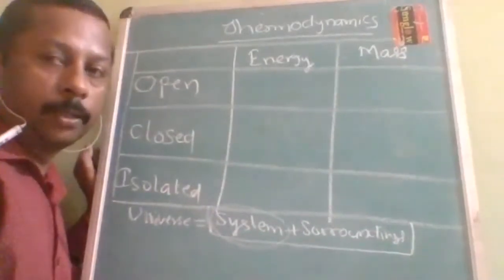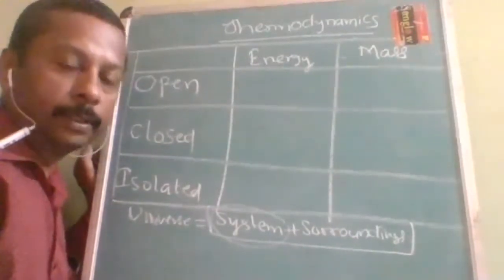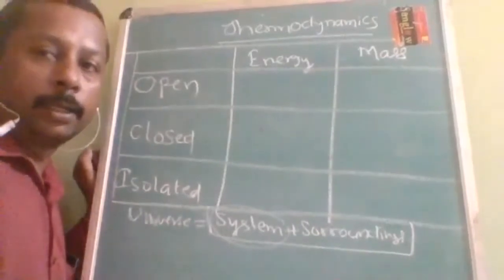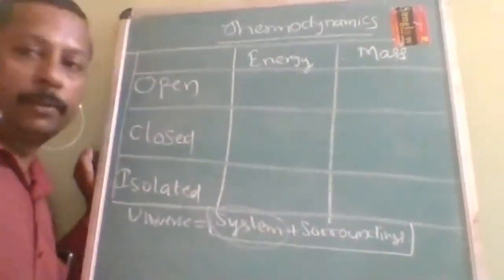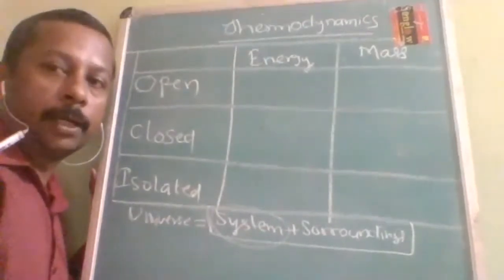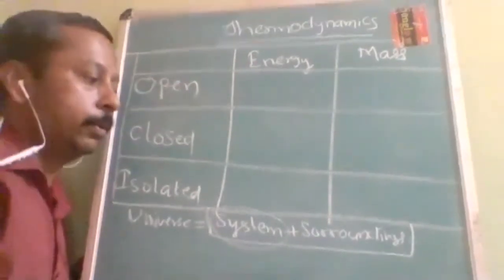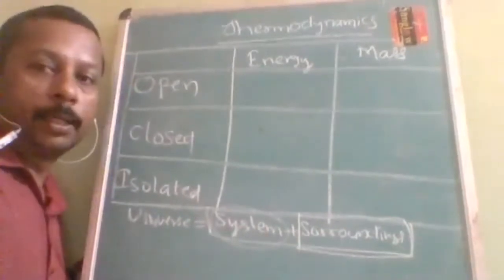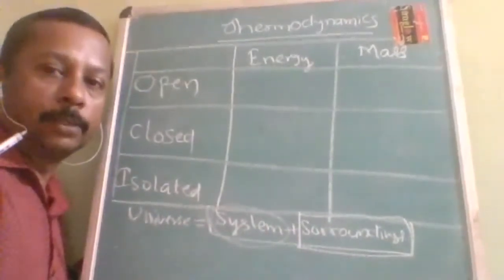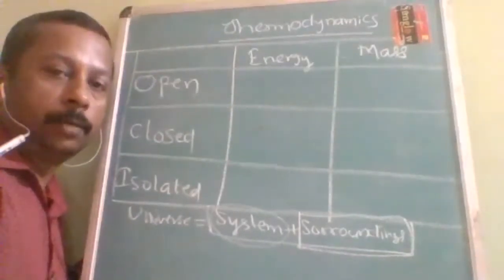Here, system does not mean a computer. Normally, 'free system' refers to a computer that can be used by anybody, but that meaning is not applicable here. Here, system means the part of the universe which is under observation. And everything other than the system that affects the performance of the system is called a surrounding.